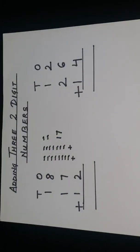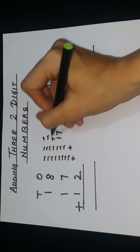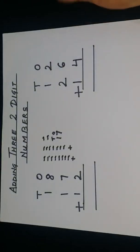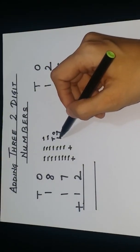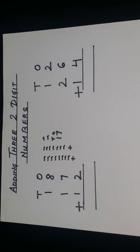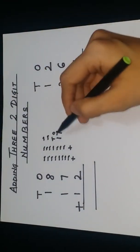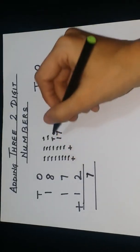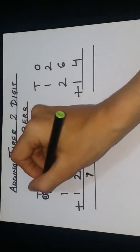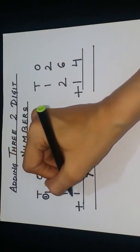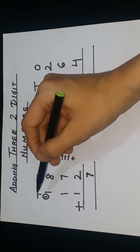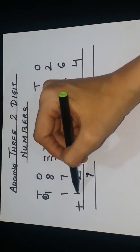Yes, 17 is a two-digit number. T, O — the digit at one's place goes under one's place and the digit at ten's place goes at ten's place. If you write the full number here, the answer will be wrong. So you will write 7 at one's place and take this 1 up — carry it over. Now you will add all four numbers including this carried 1. You can add without drawing lines — it is very easy. Start counting: 1, 2, 3, 4. It makes 4.